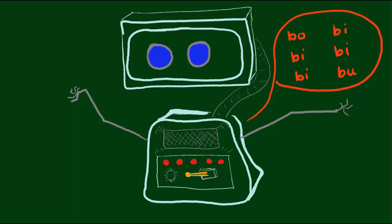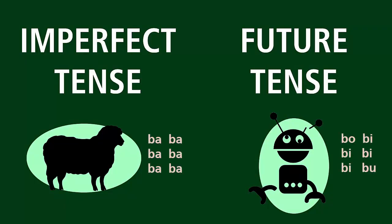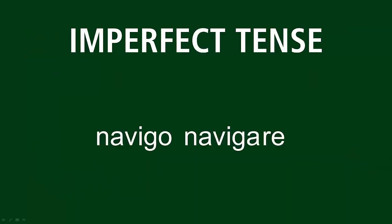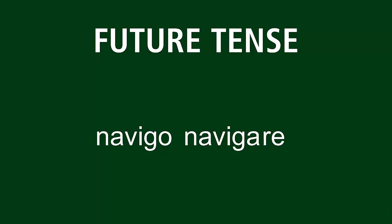Alright, now this is going to help us figure out how to conjugate a verb in the future tense. Just like the theme of the imperfect tense was sheep, the theme of the future is robots. So remember, when we were forming the imperfect tense, we first found the present stem by going to the second principal part and chopping off the -re. Since the future tense is also part of the present system, we will obviously go to the second principal part and chop the -re to find the stem.